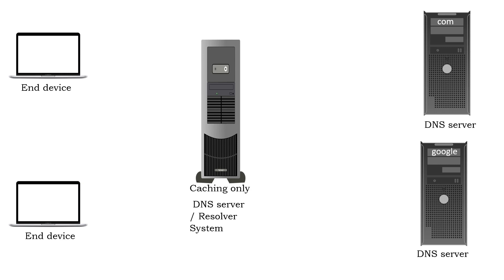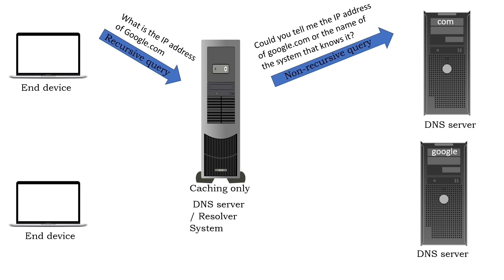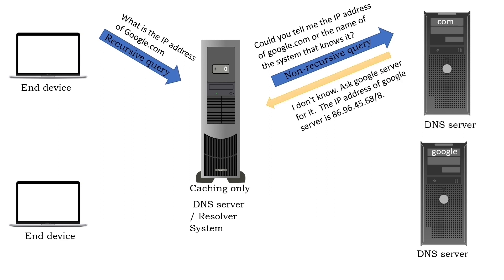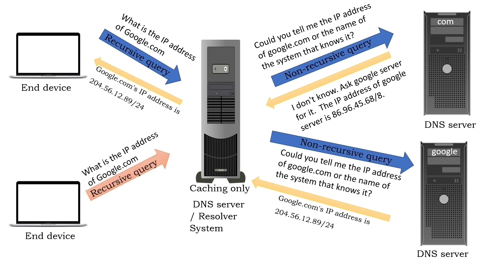For example, suppose an end device wants to know the IP address of google.com. It sends a recursive query to the resolver system. To translate this name, the resolver system sends a non-recursive query to the configured DNS server. If the DNS server knows the IP address associated with google.com, it answers the query. If not, it provides a referral to the name server that may know it. The resolver system checks the response — if it contains a referral, it sends another non-recursive query to the referral. If the response contains the answer, it caches the answer and forwards it to the end device. Next time, when it receives a recursive query for google.com, it resolves that query from the cache.